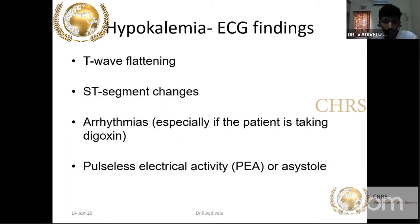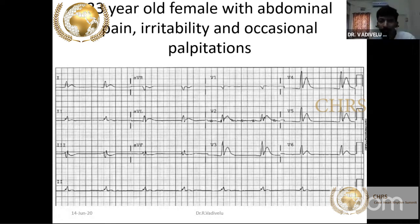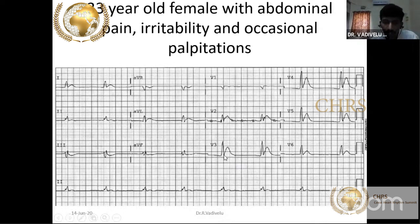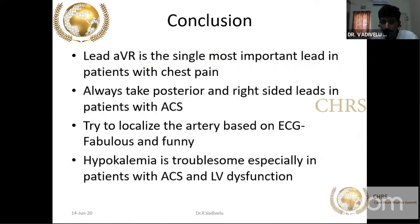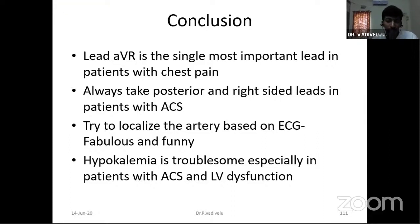In hypercalcemia, a female patient with abdominal pain, irritability, and occasional palpitations shows P waves that are not prominent, no significant ST segment, QRS followed directly by T wave — a short QT interval with absent ST segment suggests hypercalcemia. AVR is a neglected but valuable lead. Posterior leads and right-sided leads must be taken in patients with ACS. Electrolyte disturbances are very important and must be differentiated from acute coronary syndrome.